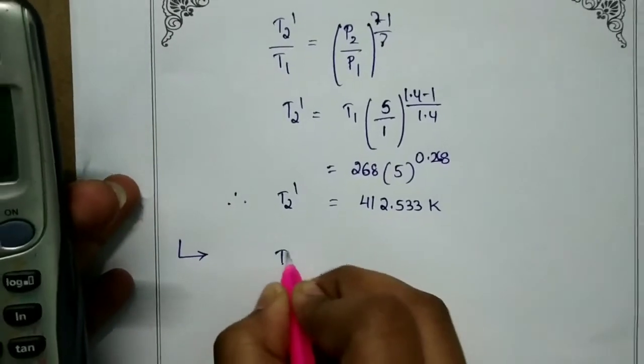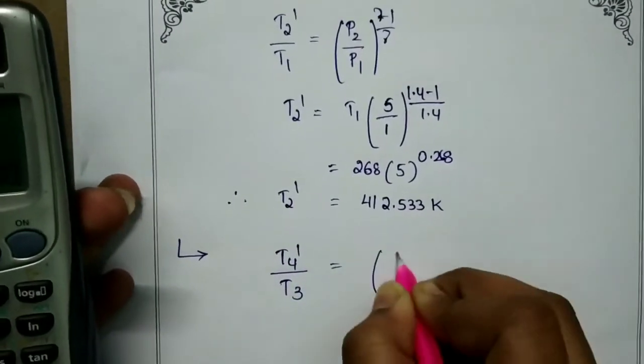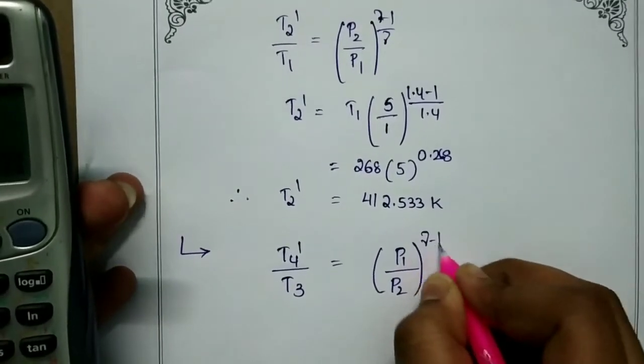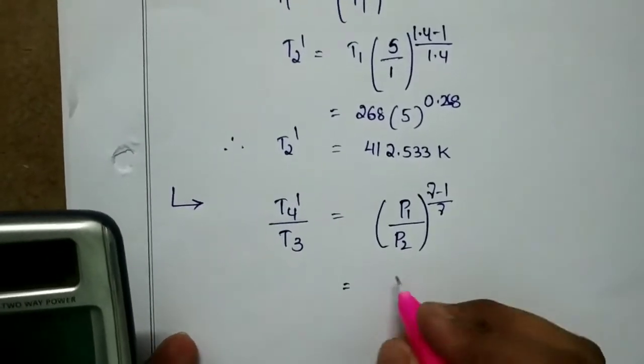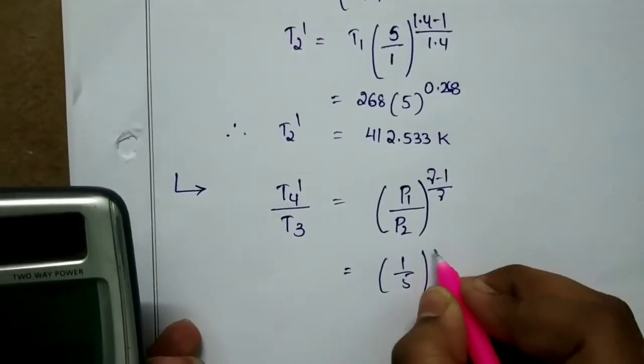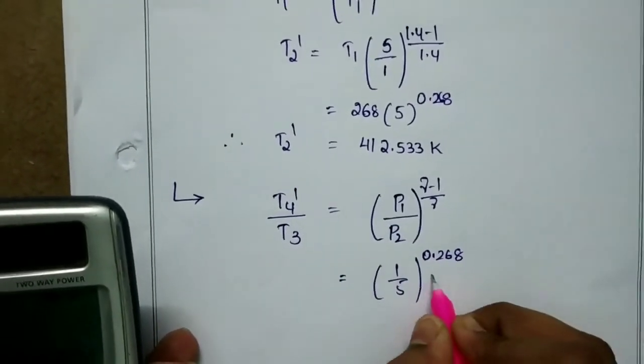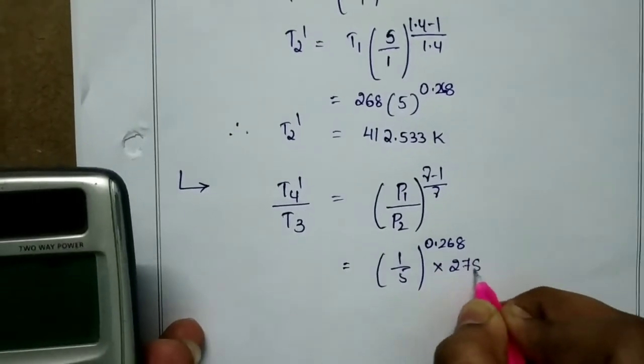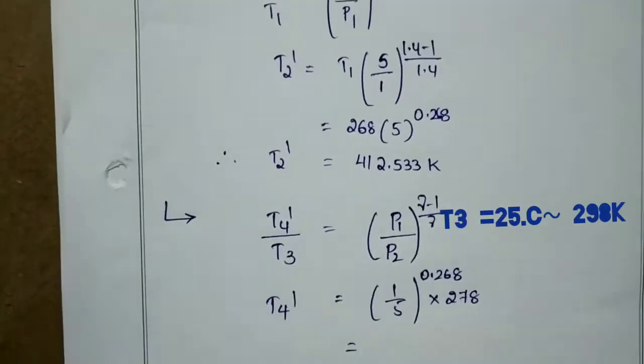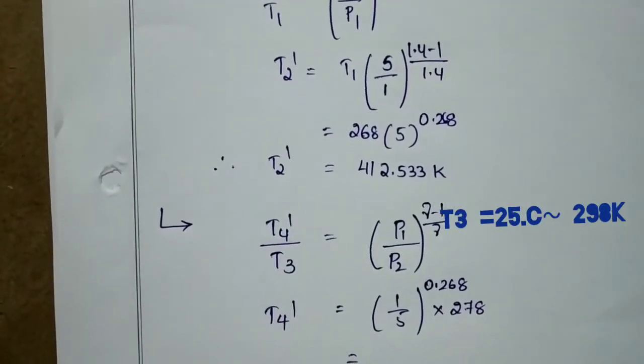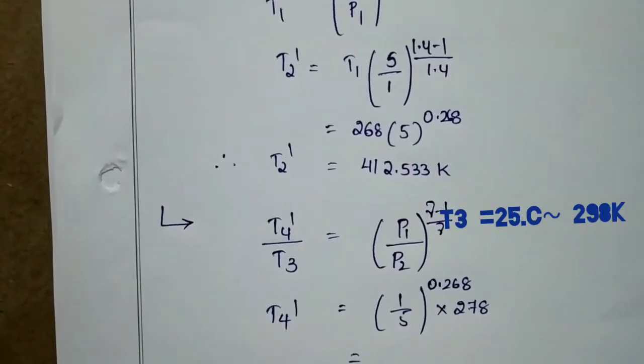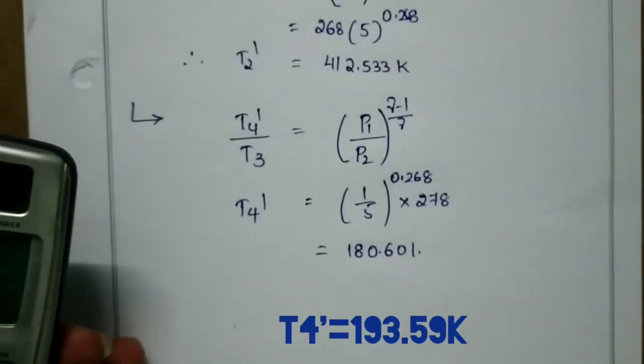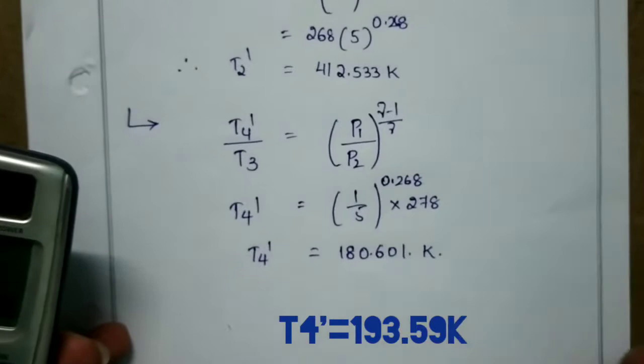Similarly, T4 dash by T3 is equal to P1 by P2 whole power gamma minus 1 by gamma, that is 1 by 5 to the power 0.268 into T3. T3 is 25 degrees Celsius, which is 278 Kelvin. So T4 dash is equal to 180.601 Kelvin.